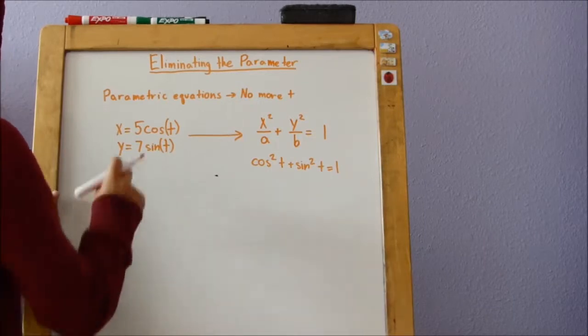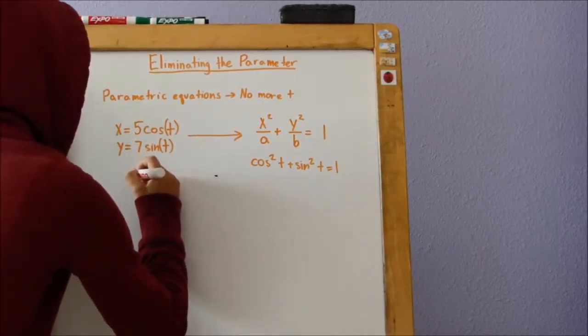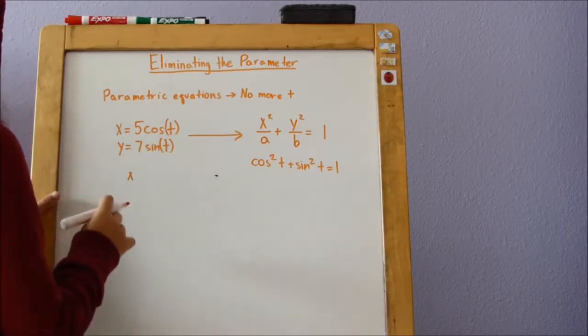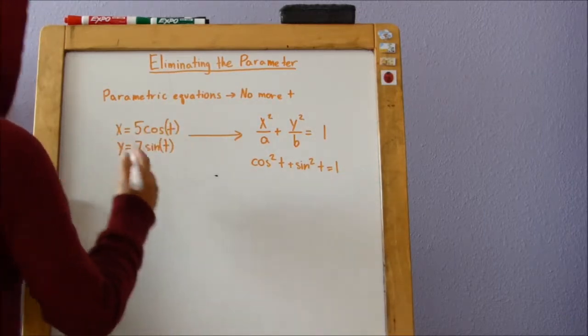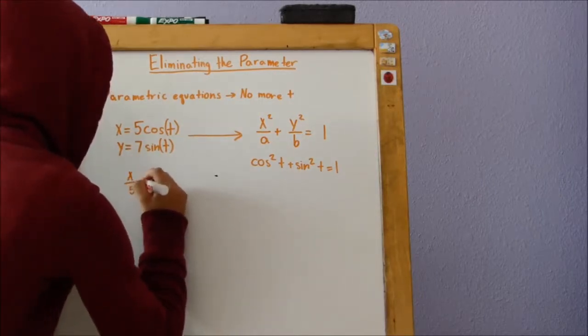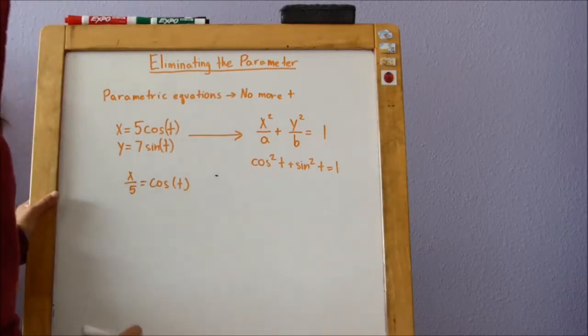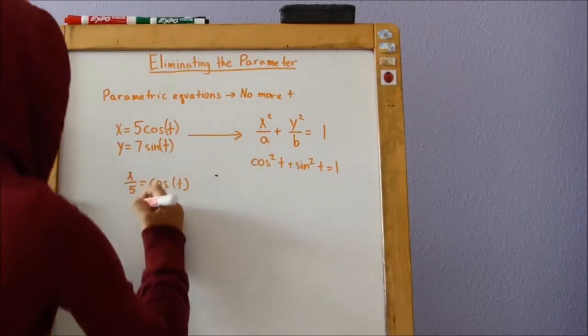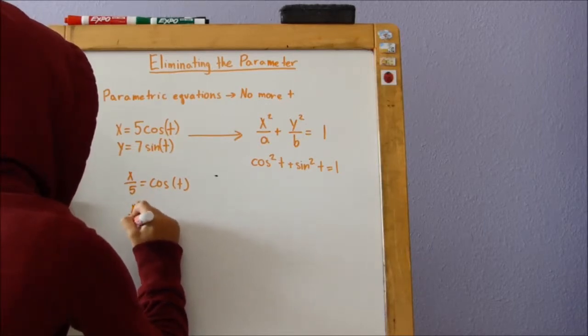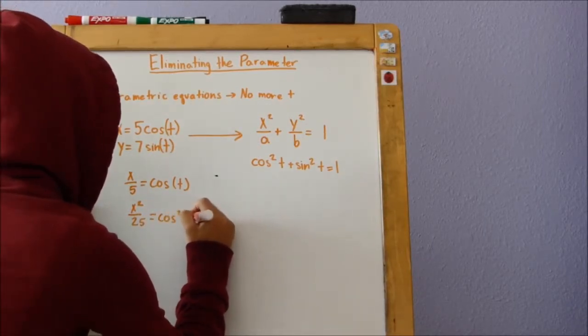So let's start off with the cosine equation. The first step, like before, is to leave the cosine t isolated. So we have to divide by 5 from both sides, cosine t. The second step to get to cosine squared t is to square both sides. So you'd get x squared divided by 25 equals cosine squared t.